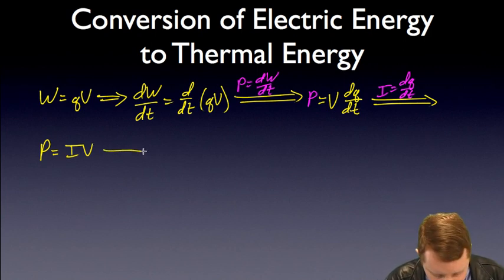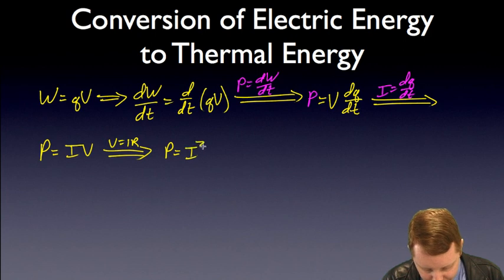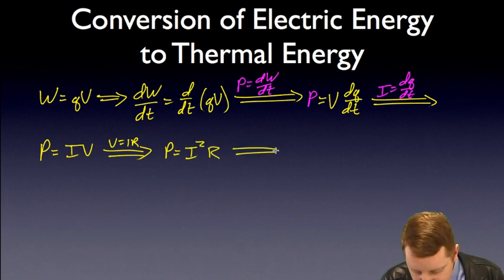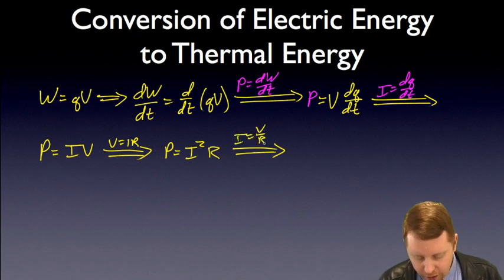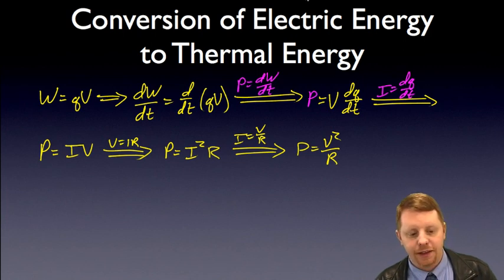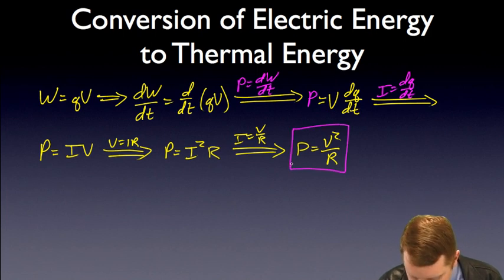But, we also know, if V equals IR, Ohm's Law, we could write this as power equals I squared R. We could go another step further and replace I with V over R using Ohm's Law again. Another manipulation of the same formula to say that power is also V squared over R. So, we have three different ways to determine the rate at which energy is used in these circuits, the power.